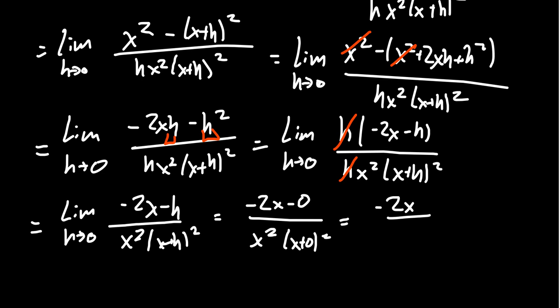We can cancel the x on top with one of the x's on the bottom. And we see that this limit will simplify to be -2 over x³. Like so. For which the original expression depended on the variables h and x. And so as h goes to zero, we see that the expression will become -2 over x³.